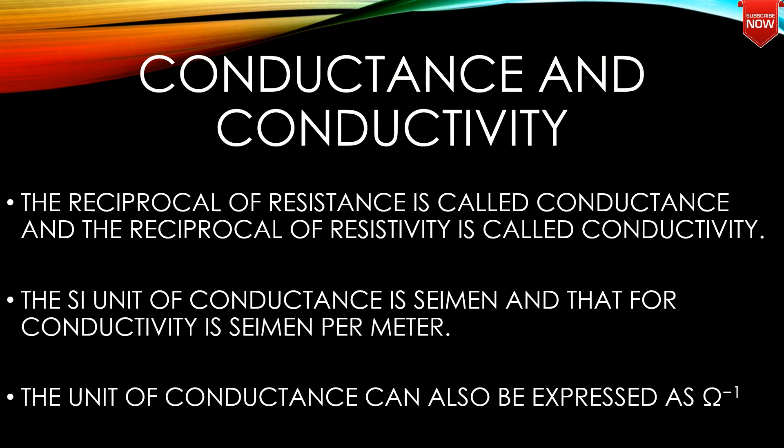Conductance and conductivity: The reciprocal of resistance is called conductance, and the reciprocal of resistivity is called conductivity. The SI unit of conductance is siemen, and therefore conductivity is siemen per meter. The unit of conductance can also be expressed as ohm raised to minus 1.